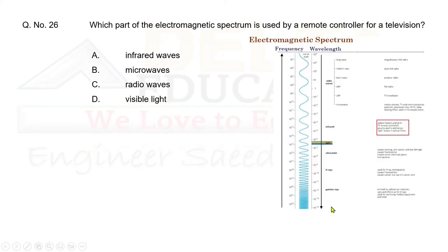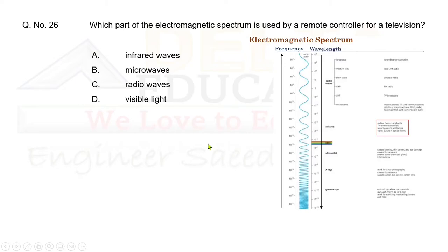Question 26: Which part of the electromagnetic spectrum is used by a remote controller for a television? For a TV remote controller we use infrared radiation. Infrared is given in option A. Correct option is A.